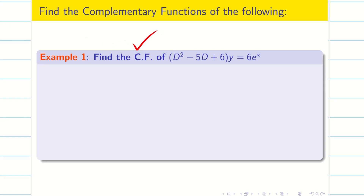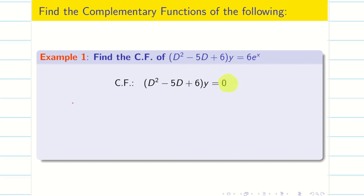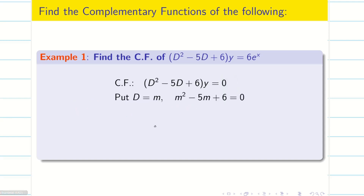Find the CF alone. When they say find CF alone, we don't need to worry about the right-hand side. To find the complementary function, we make the equation homogeneous — that is, set the right-hand side to 0. Then we write the auxiliary equation by putting D equal to m, giving us m² − 5m + 6 = 0.